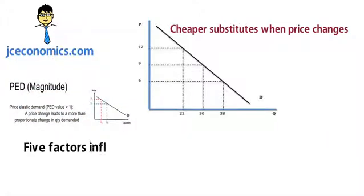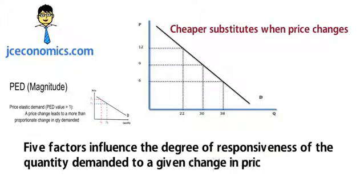Overall, these five factors influence the degree of responsiveness of the quantity demanded to a given change in price of items.